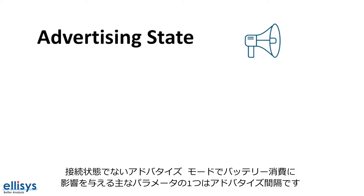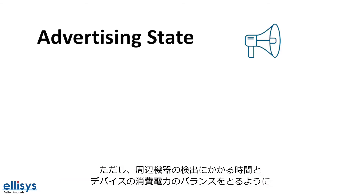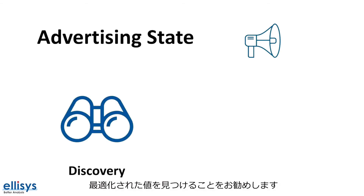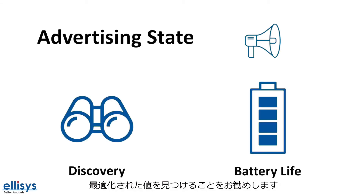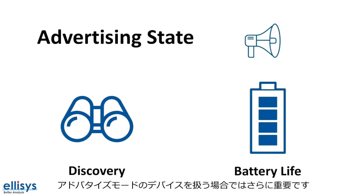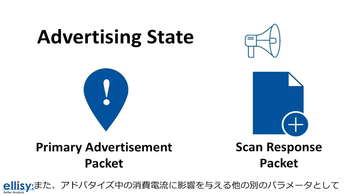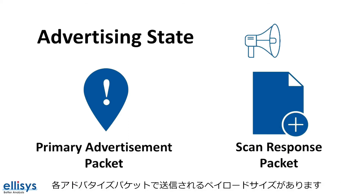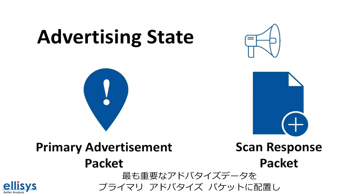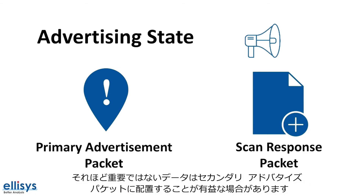Outside of connections, in advertising mode, one of the main parameters affecting battery consumption is the advertising interval. It's recommended to find the optimized value that strikes a balance between how long it takes to discover the peripheral and the power consumption of the device. This is even more important when dealing with devices that stay in broadcast or advertising mode, such as beacons. Another parameter that affects current consumption during advertising is how many payload bytes are sent in each advertising packet. It may be beneficial to place the most important advertising data in the primary advertising packet, and place all secondary, less important data in the scan response packet, which only gets requested when necessary.